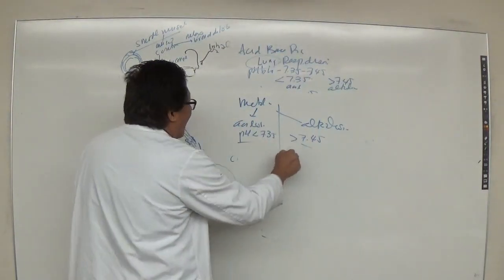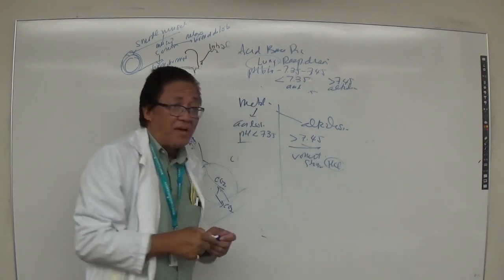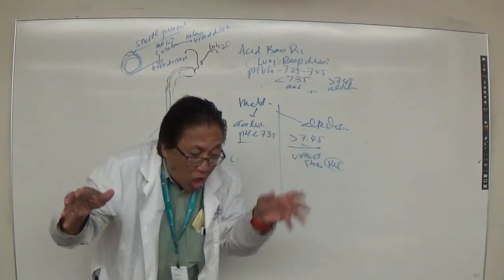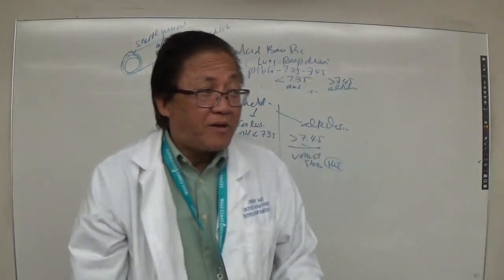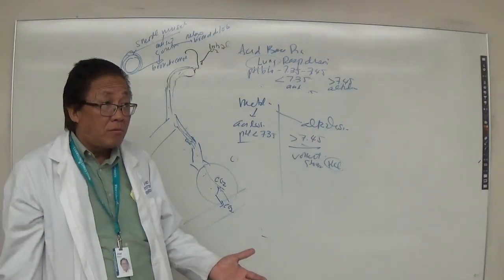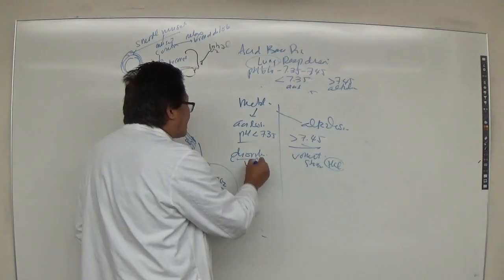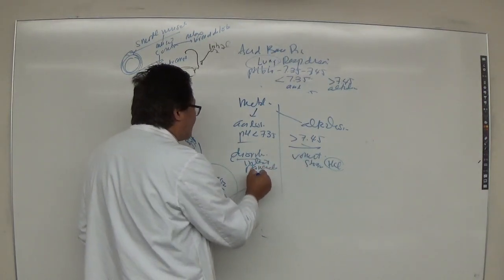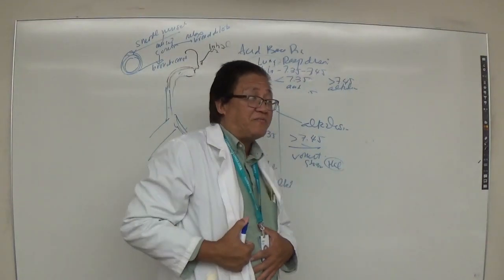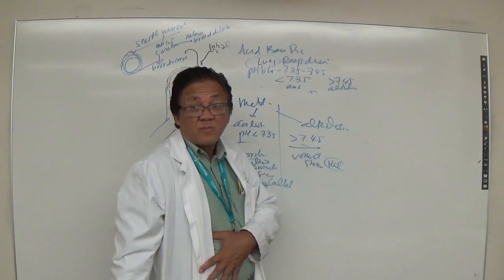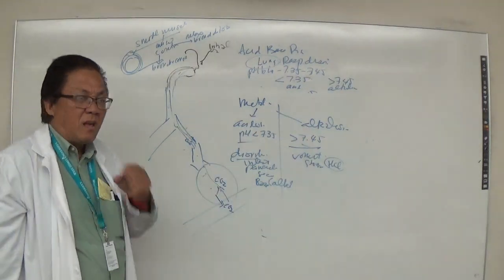Classic example of metabolic alkalosis: when you vomit, hydrochloric acid from your stomach is expelled. The acid is lost, so you become alkaline — that's metabolic alkalosis. On the other hand, when you have diarrhea, the intestinal and pancreatic secretions — which are base or alkaline — are lost. You lose the base and become acidic — metabolic acidosis.